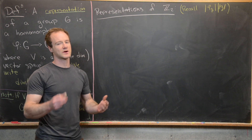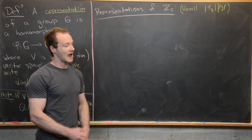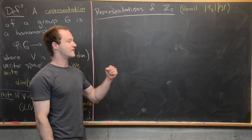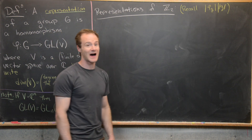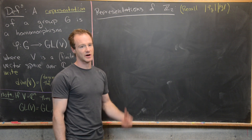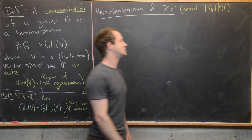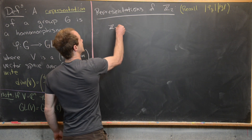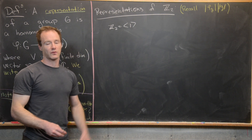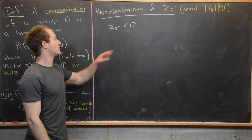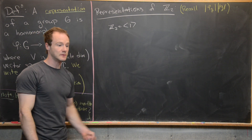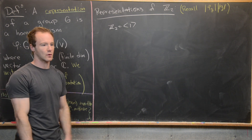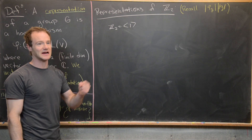Let's look at the group Z2 — the simplest non-trivial group. Recall that for a homomorphism, the order of the image of an element divides the order of that element. So the order of phi_g must divide the order of g. Since Z2 is generated by 1 with the relation 1+1=0, the element 1 has order 2, so its image has order 1 (the identity) or 2.